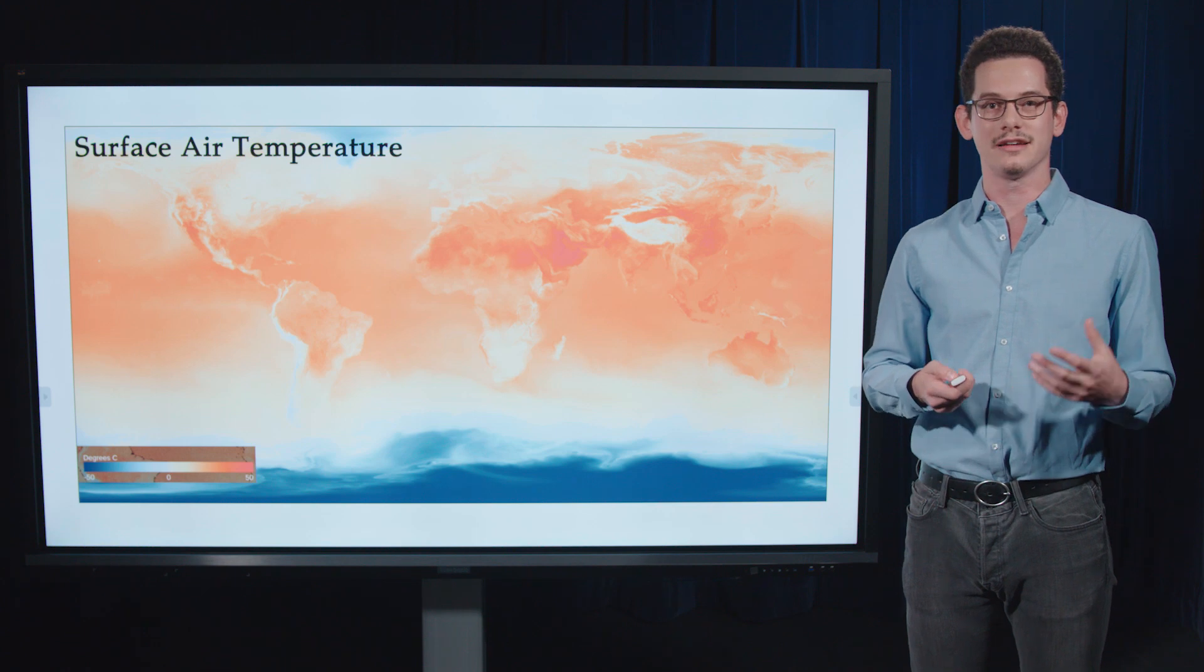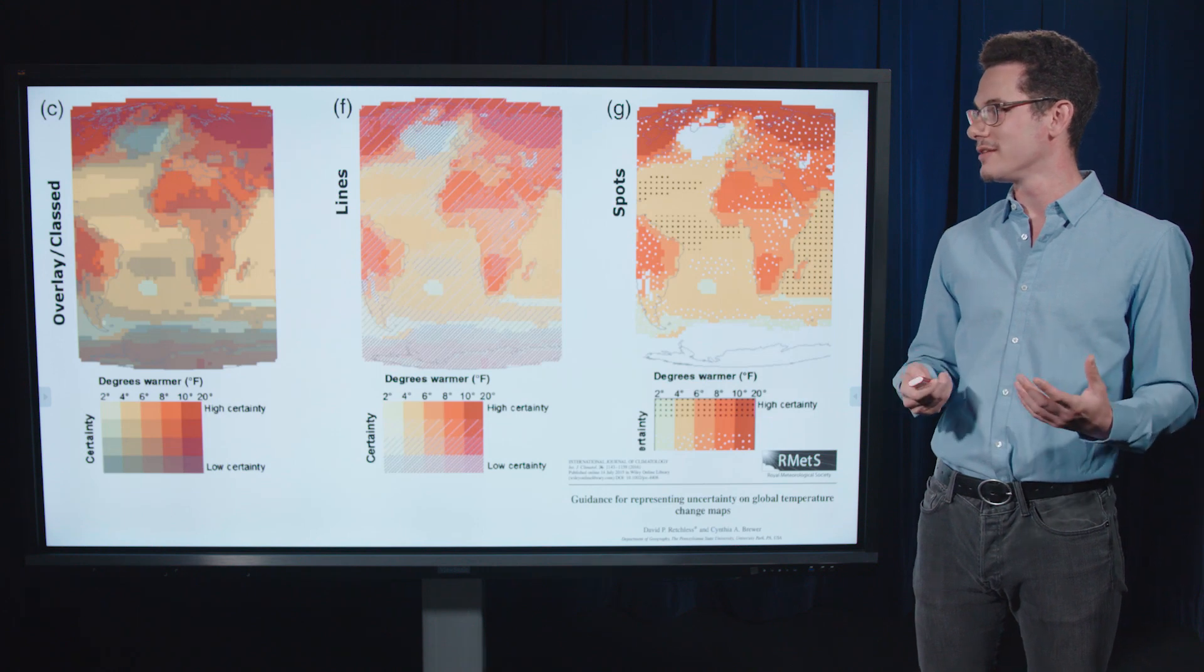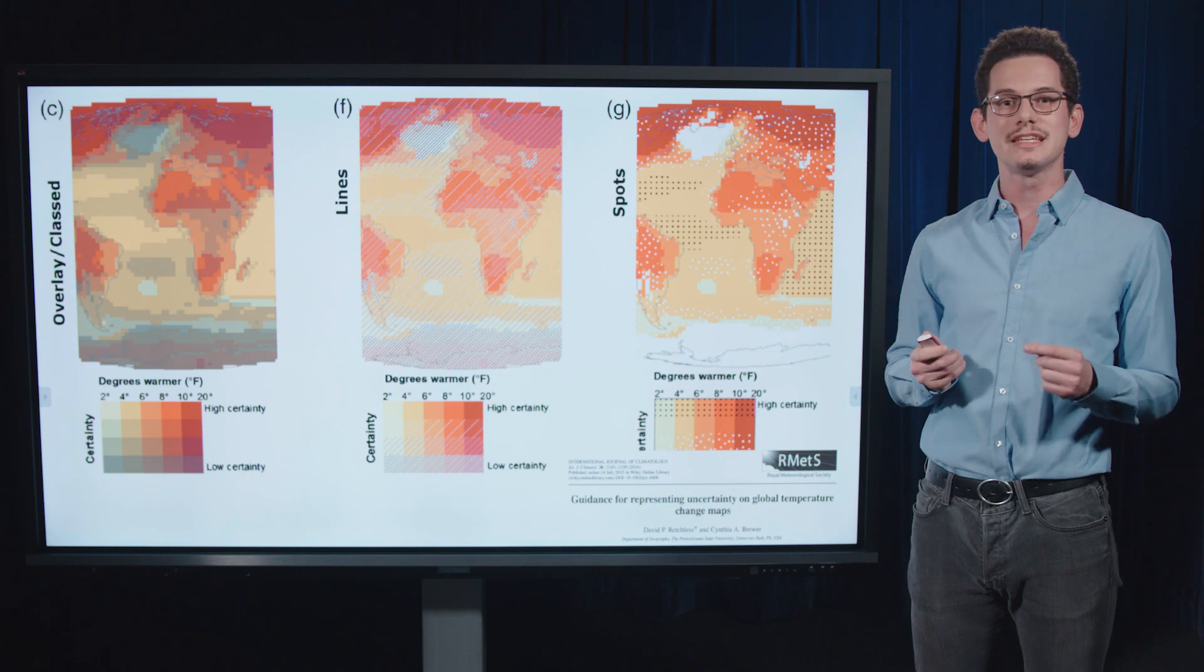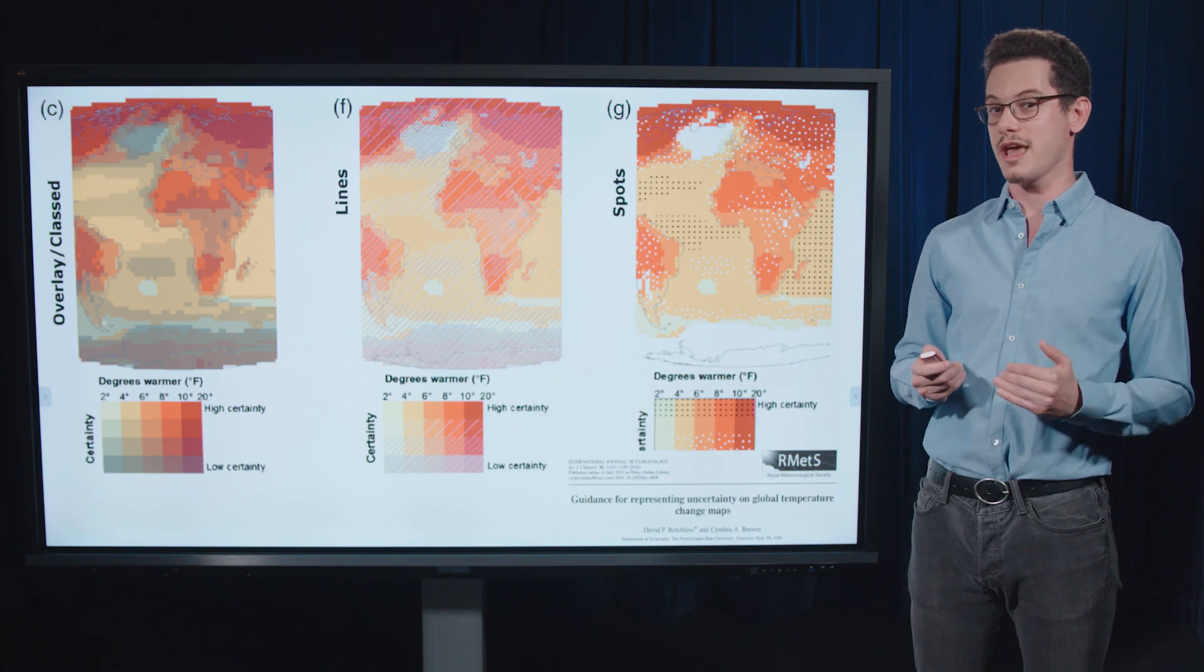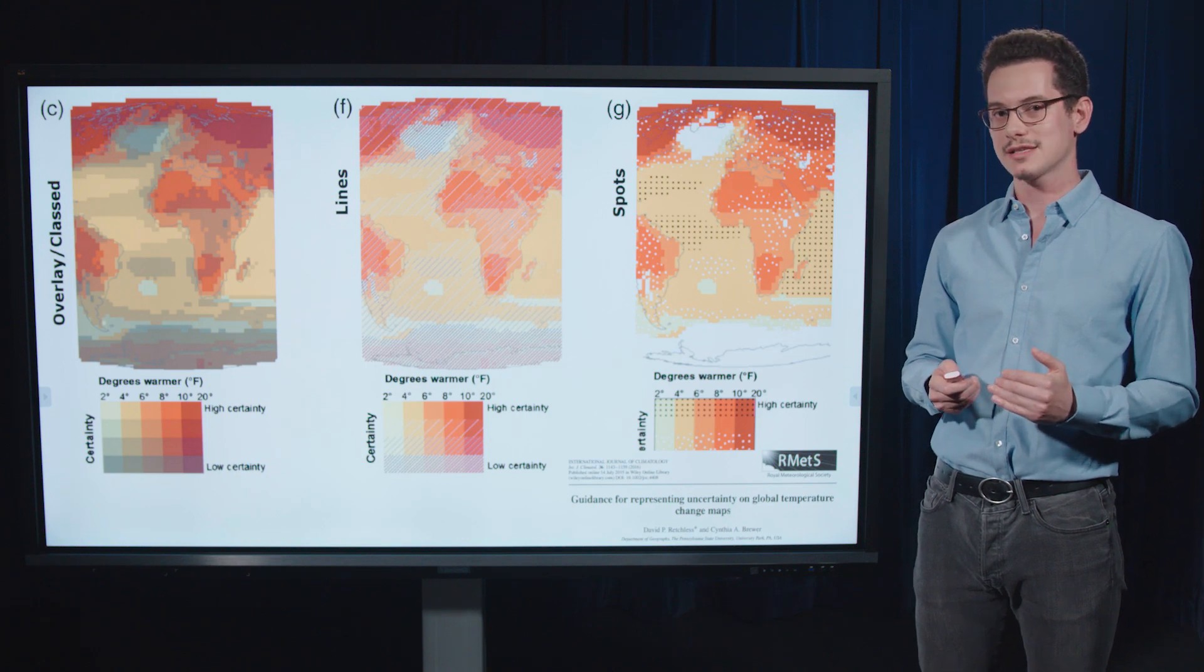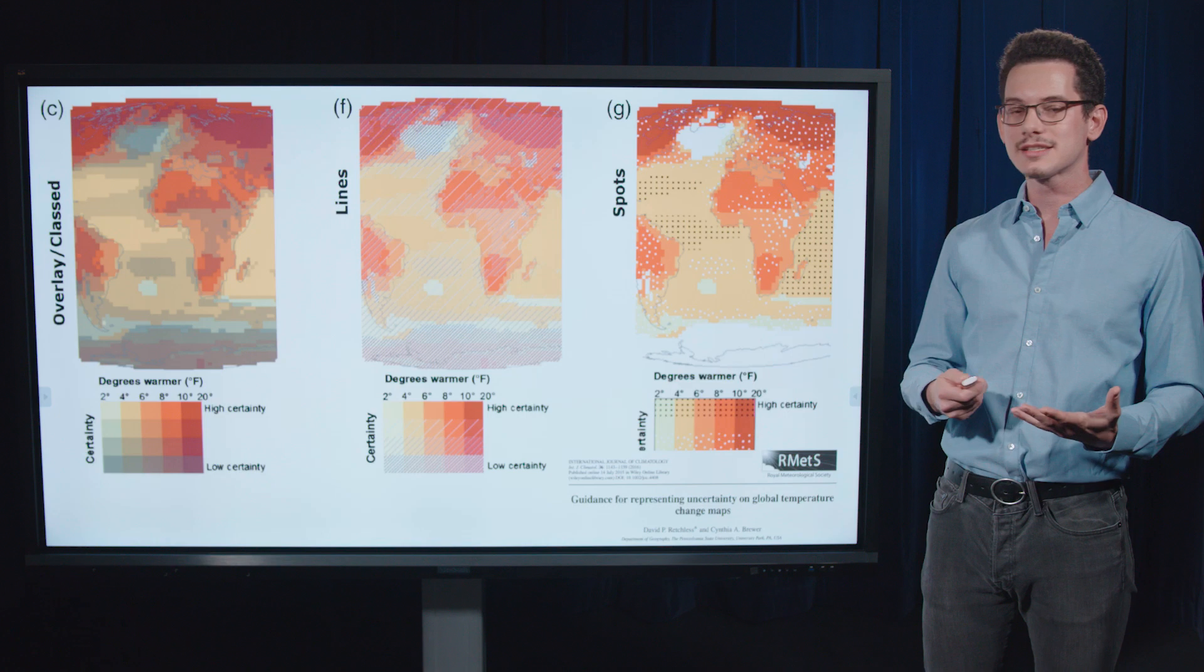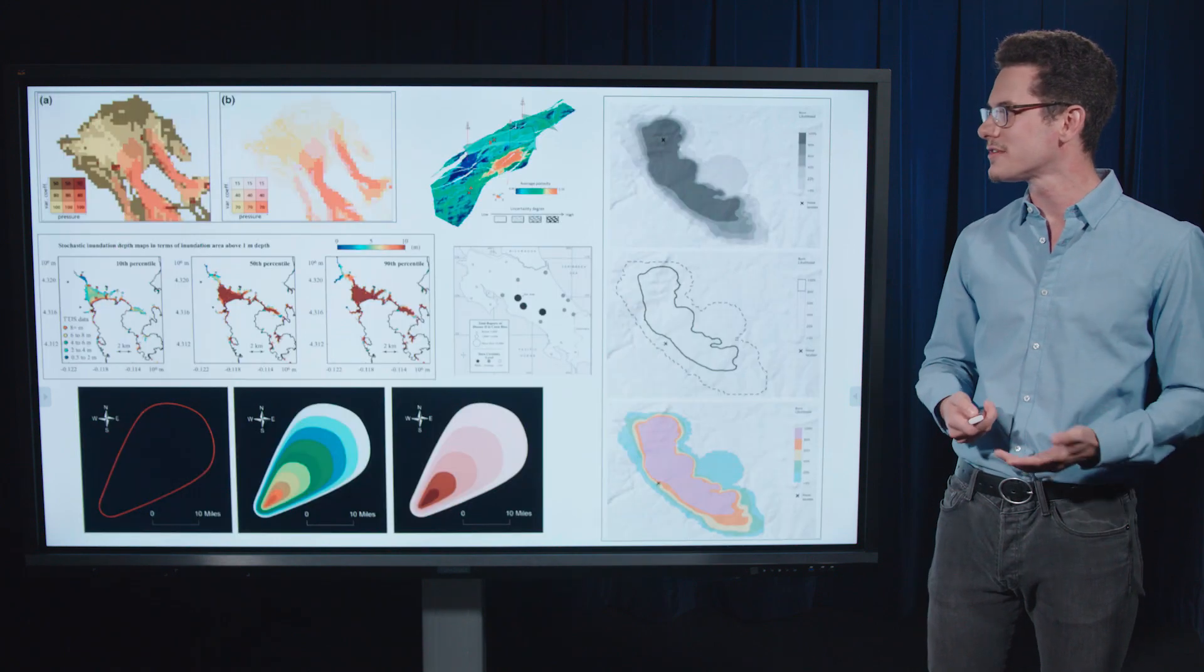If we think about that spatial heat map like this projected temperature, we again have a multitude of approaches. So in this paper by Retchklis and Brewer, they actually looked at a dozen different approaches. Here are three of them. So we can show the certainty level of our forecast by sliding the color down to gray, reducing the saturation of the color, as we get lower certainty forecasts. We can show it also by overlaying patterns of either lines or dots that represent the certainty level of the forecast.